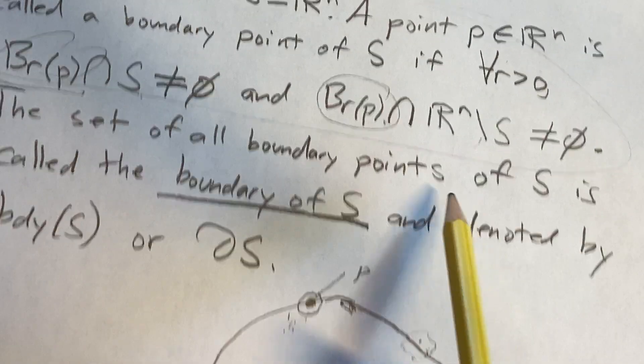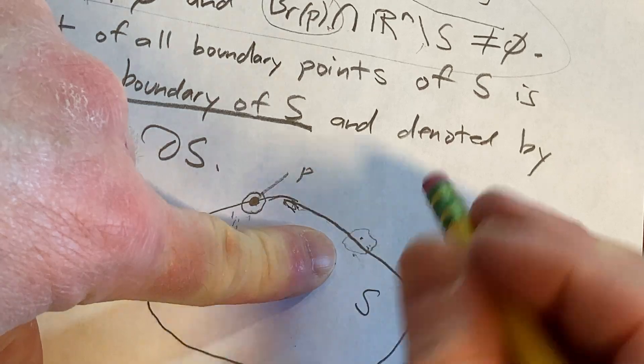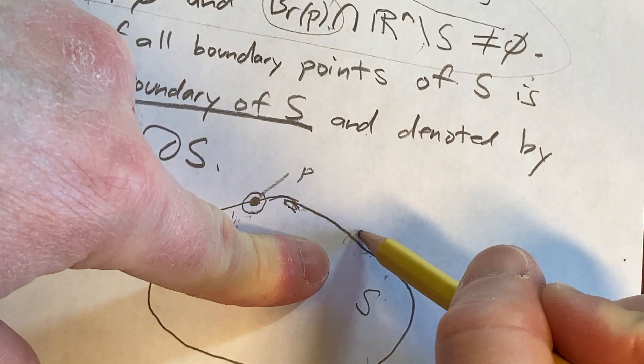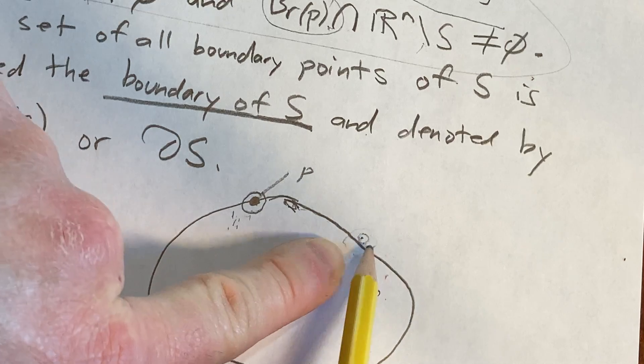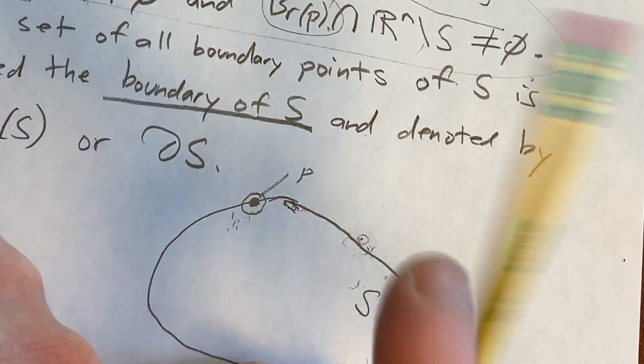But the problem is it has to be true for all R. So what I can do then is say, wait a minute, I can make it smaller. And now look, there's no points. There's no points in that ball that live inside S. Definition fails. It's not a boundary point.